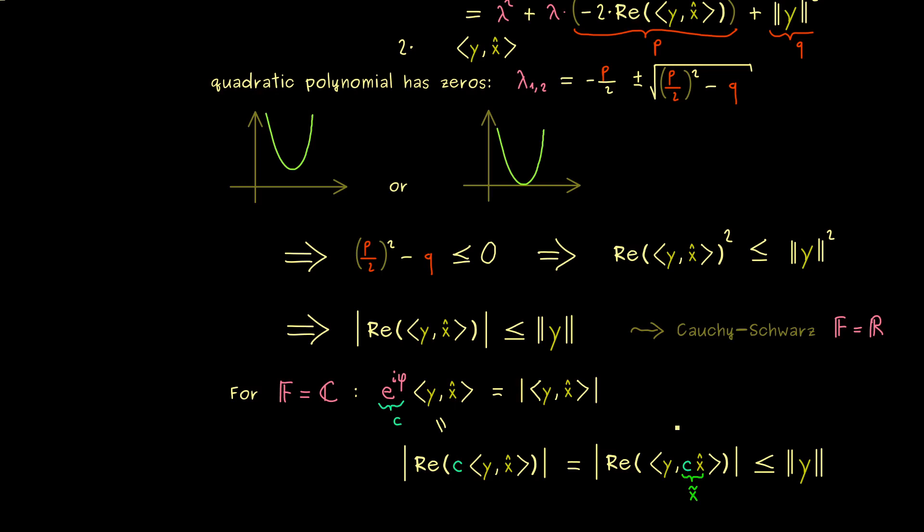Okay, there we have it. This is the whole proof of this important inequality. And if you are interested in seeing another proof you can watch part 10 in my functional analysis course. So I really hope this was helpful and then let's meet in the next videos where we talk more about inner products. Namely we will talk about orthogonal projections. So have a nice day and see you soon. Bye.